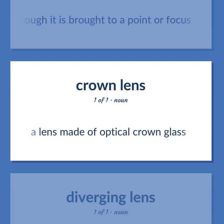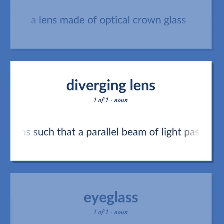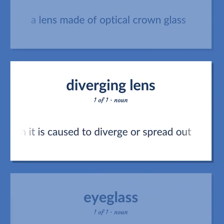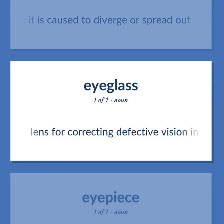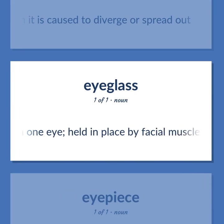Lens types: crown glass lens — a lens made of optical crown glass. Also: diverging lens — a lens such that a parallel beam of light passing through it is caused to diverge or spread out. Also: monocle — a lens for correcting defective vision in one eye, held in place by facial muscles.